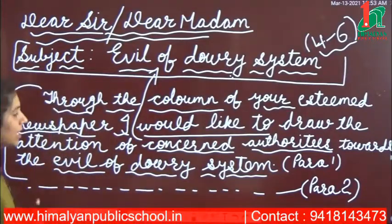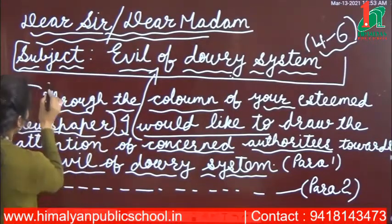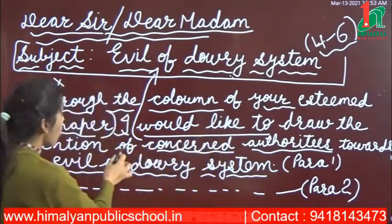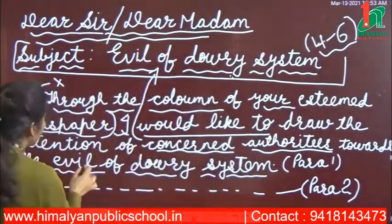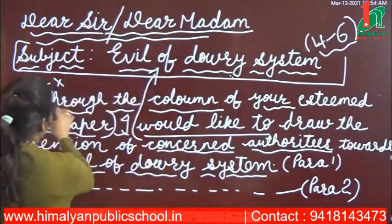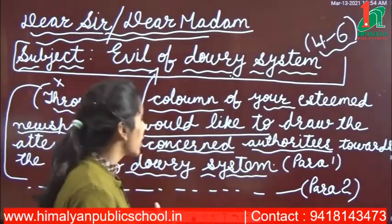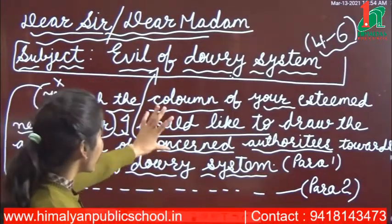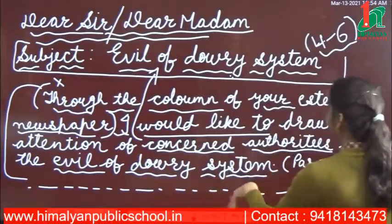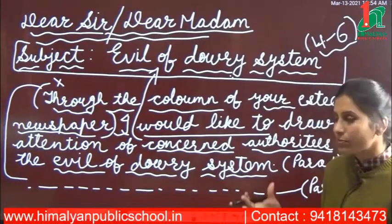If you are writing directly to the superintendent of police, then you will write: 'I would like to draw the attention of concerned authorities towards the evil of Dowry System.' So the difference is: for the editor, add the 'through the column' line first. I mentioned writing the body in three paragraphs — the first paragraph serves as the introduction.